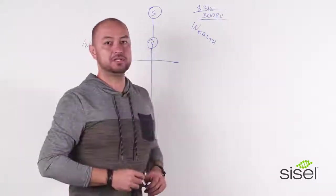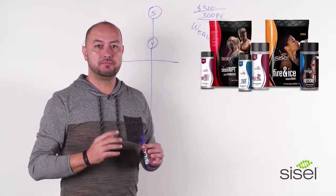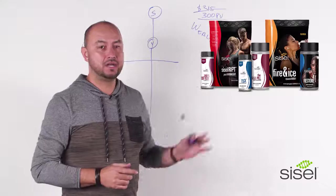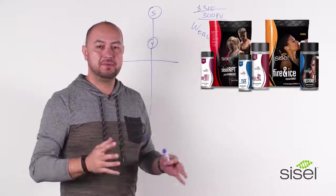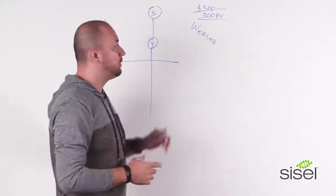So to participate in the Wealth Builder System, you need to make sure that everybody in your organization purchased a Wealth Builder Pack. Regardless of which one it is, everybody has to be participating in this system with one of those packs, and this is how it works.